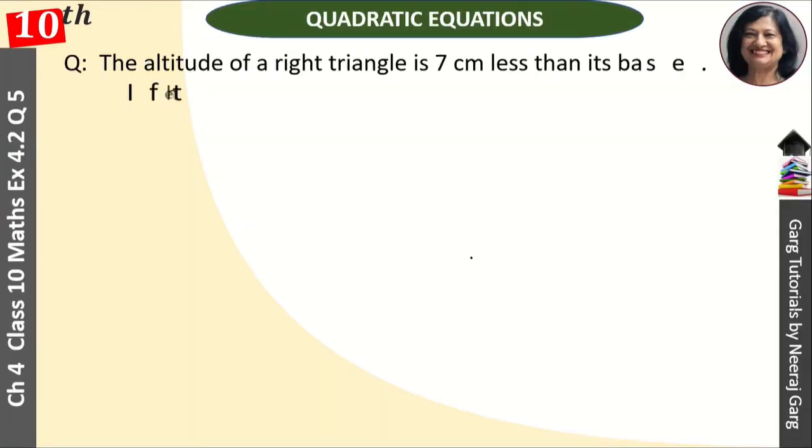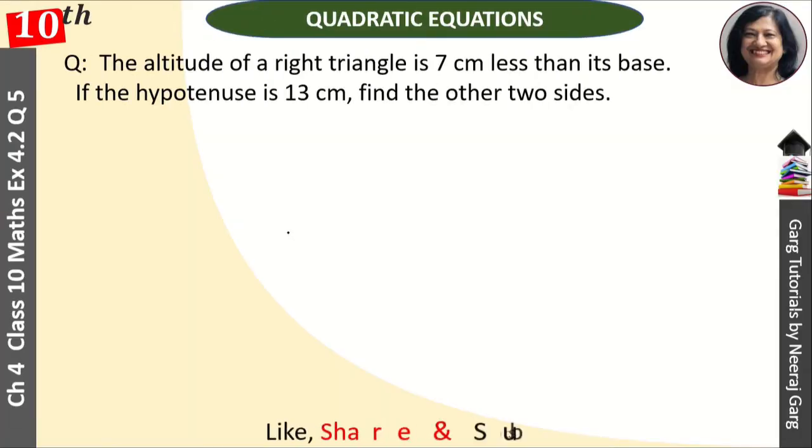Hi, this is Niraz Garg and you are watching Class 10th, Chapter 4, Quadratic Equations. The altitude of a right triangle is 7 centimeter less than its base. If the hypotenuse is 13 centimeter, find the other two sides.